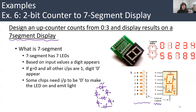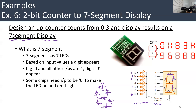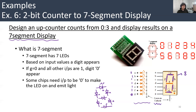For example, if all of them are ones except G — so G is zero and all others are ones — then A, B, C, D, E, F will emit light and G will not. This is basically digit eight.